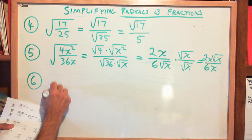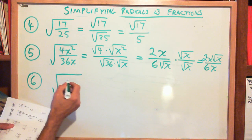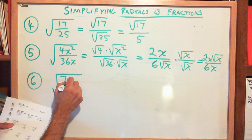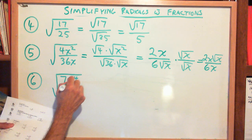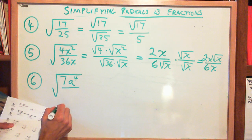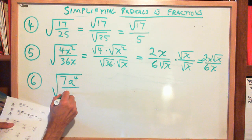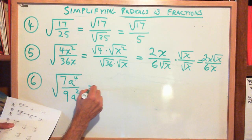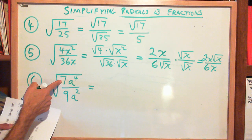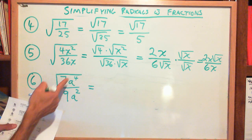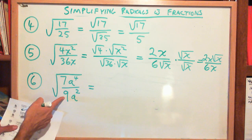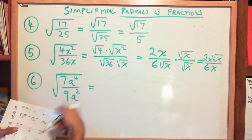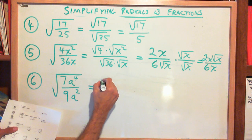Example 6: the square root of 7a to the 4th over 9a squared. Is 7 a perfect square? No. Is a to the 4th a perfect square? Yes, it is. Is 9 a perfect square? Yes. Is a squared a perfect square? Yes. So it's worth trying to separate things out.